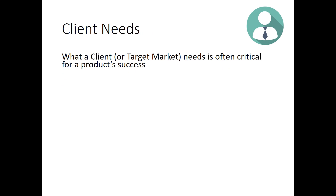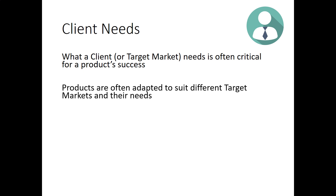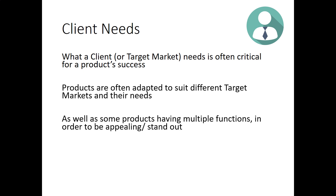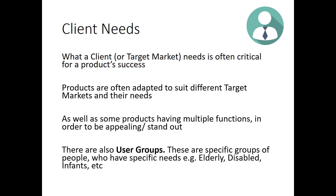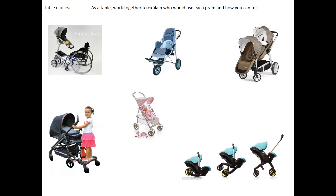Client needs are often critical for product success. Products are often adapted to suit different target markets and their needs, and some products have multiple functions to be appealing and stand out. These groups are called user groups — specific groups of people with specific needs, such as the elderly, disabled, or infants. Within your product you might have a particular user group you are aiming your design at. For example, here is a range of different prams, all relatable to different user groups — pause the video and see if you can figure out which pram is intended for which user group.